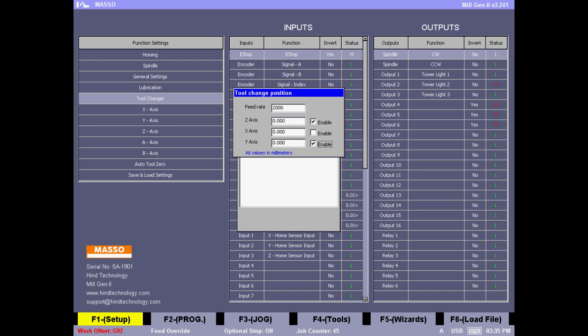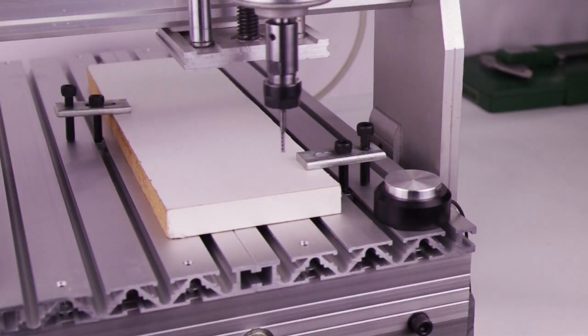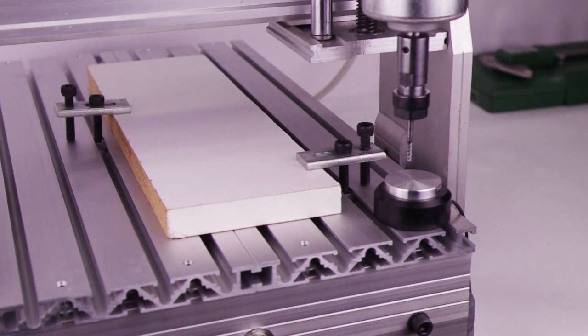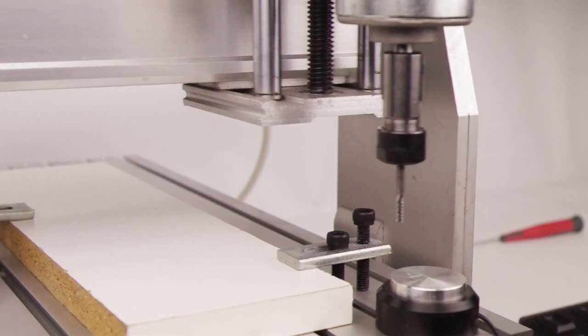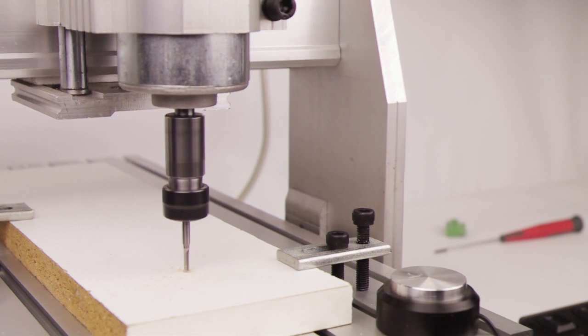Let's run a test program. We've loaded this file and the controller wants us to load tool number 3. After changing the tool, press enter. MASSO will automatically start the tool zero process, come and touch the plate, and start machining.